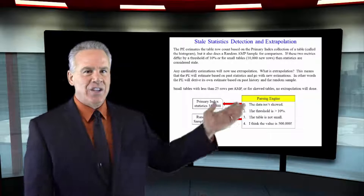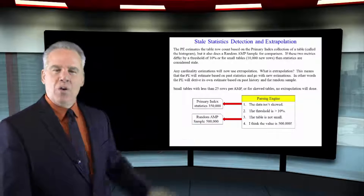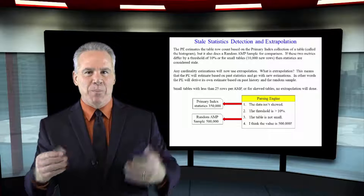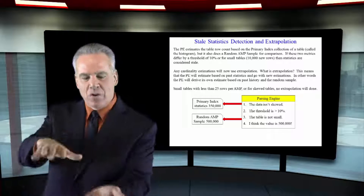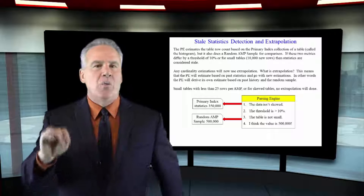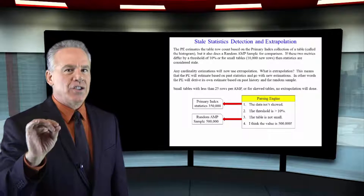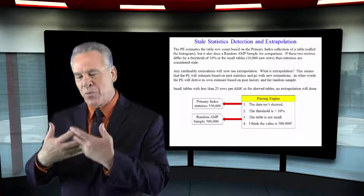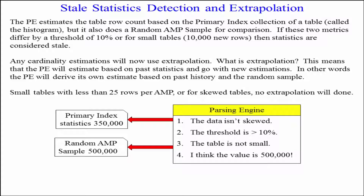Stale statistics detection and extrapolation — what do those mean? We collect statistics on a table, but each time we do, even though statistics are collected, when a query is run, the parsing engine does a random AMP sample and compares it with the collected statistics. If it's off by about 10% or more, they assume the statistics are stale and go with the random AMP sample.